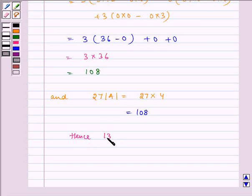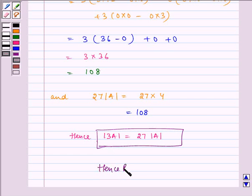Hence, determinant of 3A is equal to 27 multiplied by determinant of A, hence proved. I hope you understood the problem. Bye and have a nice day.